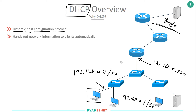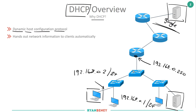DHCP sits on the network and depending on the organization, it can be the router acting as the default gateway relay, or they sometimes have dedicated servers on-site, or a remote dedicated server for DHCP relay. DHCP gives the ability where a host with no IP address connects to the network — it can't communicate with anyone — so it goes through what we call the DORA process: Discover, Offer, Request, and Acknowledge.